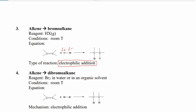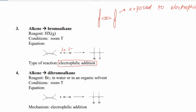The pi bond — because of parallel overlap — has its electron density above and below the sigma bond, so these electrons are exposed to the electrophile. That is why the electrophile will attack. We have ethene with a carbon-carbon double bond, and HBr with partial positive and partial negative charges.